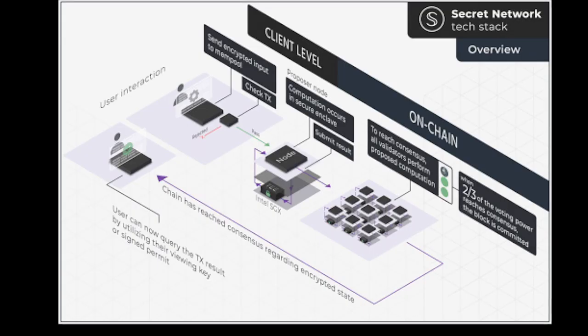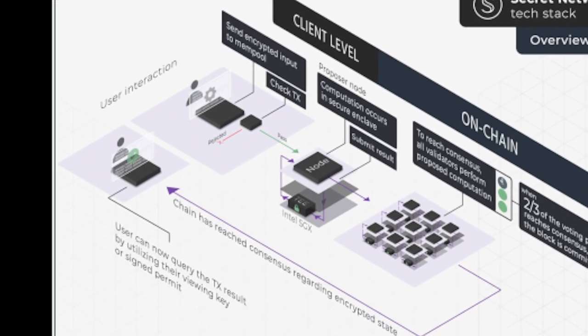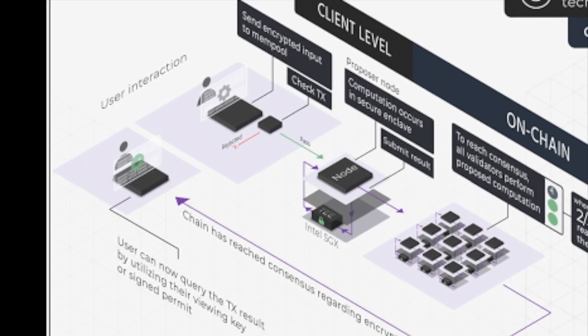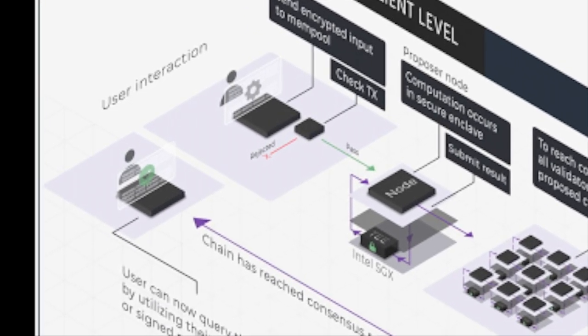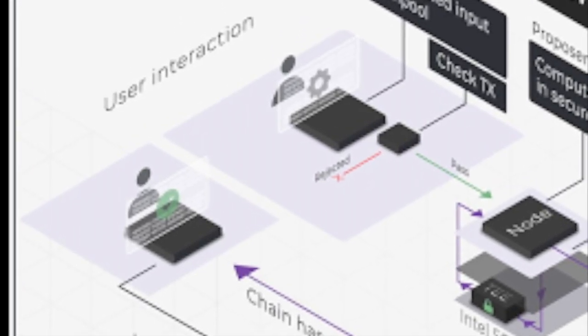Now the block-proposing validator will propose a block that contains that data — the encrypted outputs and the updated encrypted state that reflects this new state of the chain, this new decentralized ledger that includes your transaction. In order for that to go through, at least two-thirds of participating validators must achieve consensus on that encrypted output and state. Once that consensus is reached, your transaction is committed to chain. On Secret, block times are six seconds.